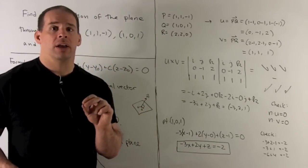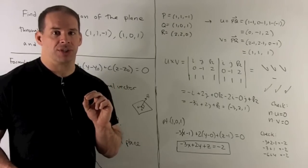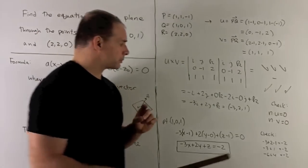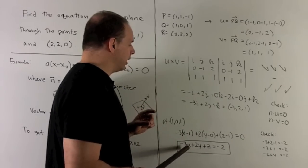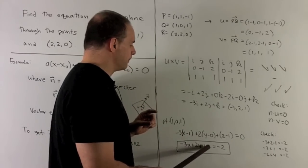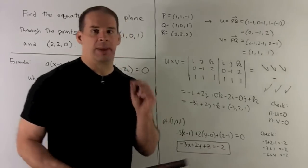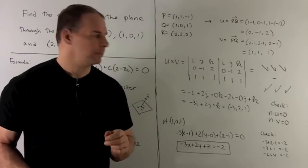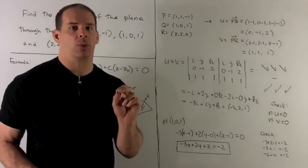To check on my work, let's just put each point in, see that they satisfy the equations. So I put in (1, 1, -1). What comes out? I'm going to get -3 + 2 - 1. That's going to give me -4 + 2 gives me -2, and we're good. (1, 0, 1) we know that's going to work because that's the point we started with.